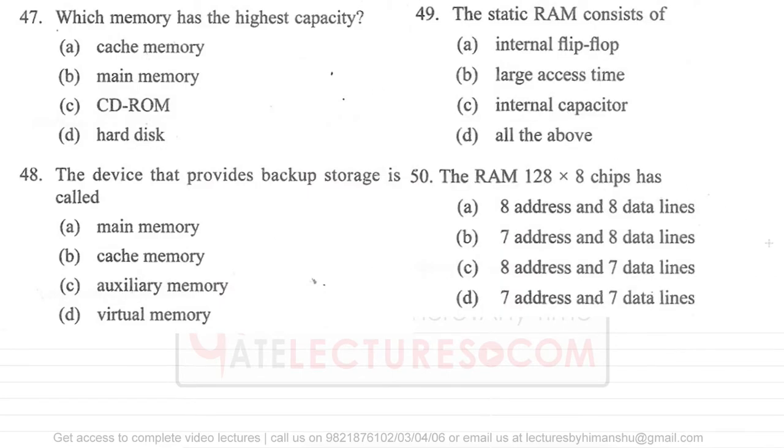Question 47 says: which memory has the highest capacity? As I've told you many times, hard disk has the highest capacity compared to other memories. Cache memory is very small, main memory is greater than cache memory, and CD-ROM is a secondary memory but its capacity is not very high. CD-ROMs nowadays store around 700 MB of data, but main memory itself—for example, on my laptop I have 16 GB of main memory. Generally, we use 8 GB to 24 GB as main memory for general purpose computers.